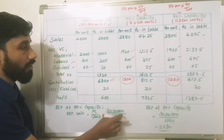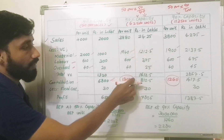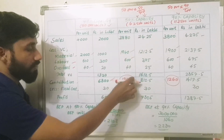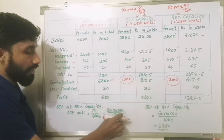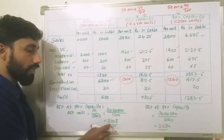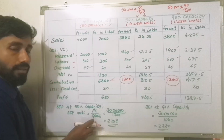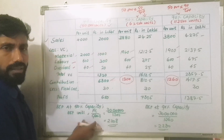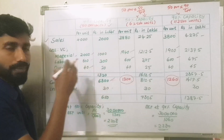Contribution at 50% capacity is Rs. 1,300 per unit. So BEP units at 50% capacity is 30 lakhs divided by 1,300, which gives approximately 2,300 units BEP. We can also calculate the PV ratio BEP.